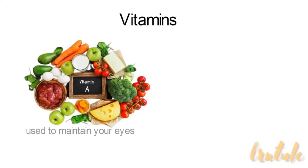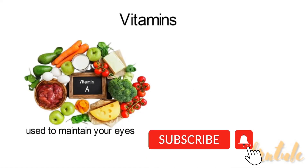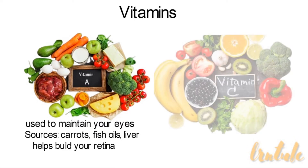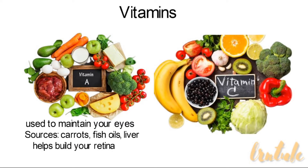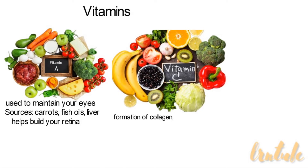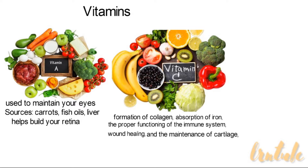Vitamins include vitamin A, which is used to maintain your eyes, and you can get it from carrots, fish oils, and liver. Vitamin A improves your eyesight by helping you build your retina. Vitamin C is involved in many body functions including the formation of collagen, the absorption of iron, the proper functioning of the immune system, wound healing, and the maintenance of cartilages, bones, and teeth.